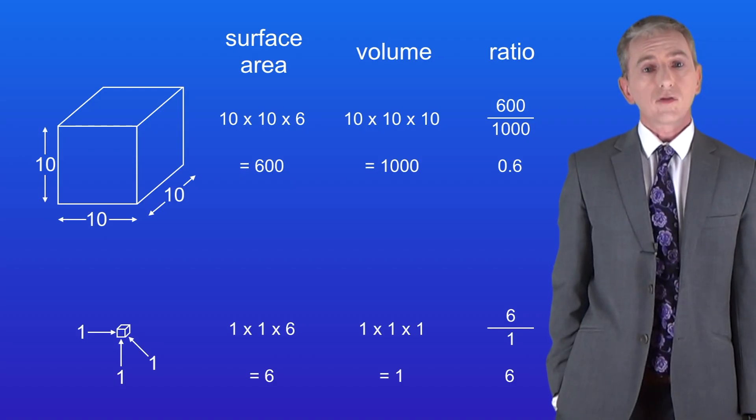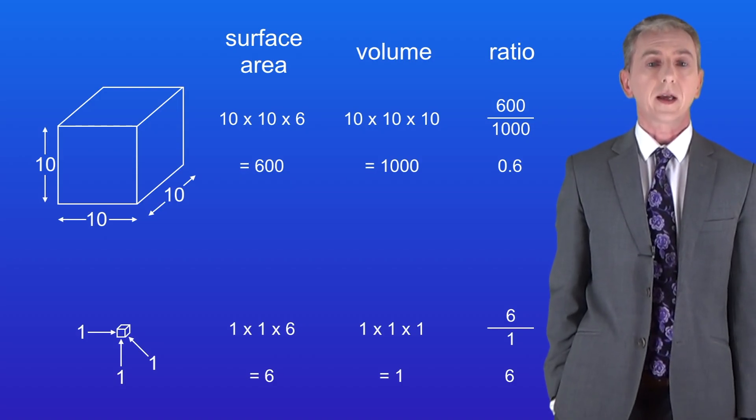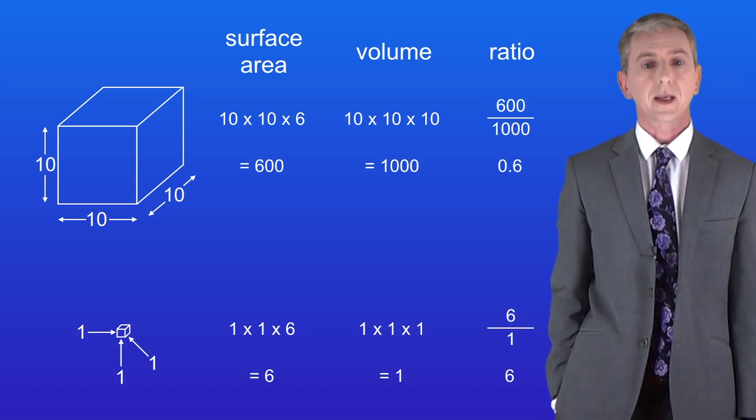So as you can see, if we decrease the side of the cube by ten times, we increase the surface area to volume ratio by ten times.